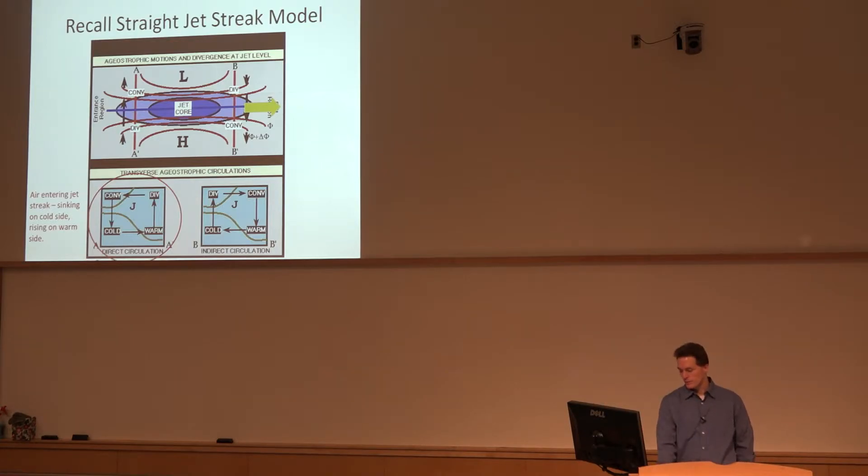On the cold side there's descent, which is adiabatic warming. We're trying to reduce the temperature gradient as the response to the atmosphere. That's the direct thermal circulation in the entrance region of the jet. Air leaving, moving out the exit region, it's the opposite. It's frontalytic.